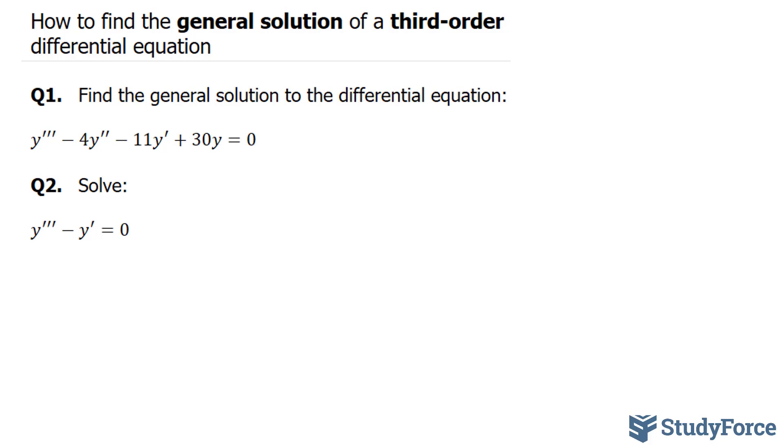What I first want to do is write this in terms of its auxiliary equation. I can do that by converting this into m to the power of 3, converting this term into minus 4m to the power of 2, this term into minus 11m, this into 30.